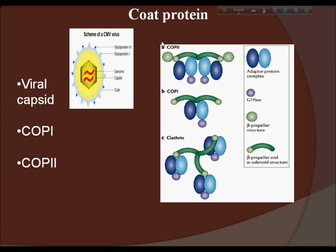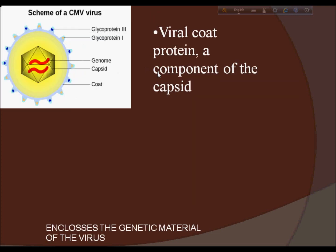First, we will get knowledge about viral coat protein. Viral coat protein means capsid — a component of the capsid. A capsid is the protein shell of a virus. It consists of several oligomeric structural subunits made of protein called protomers. The observable three-dimensional morphological subunits, which may or may not correspond to individual proteins, are called capsomers. The capsid encloses the genetic material of the virus.